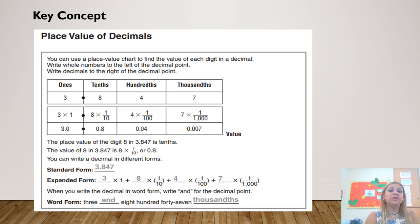Then you have the standard form. It is the number written in digits. It is the normal way to write the number. You will write it as 3.847. Then you have the expanded form. This is when you expand the number and use the addition sign in the middle.